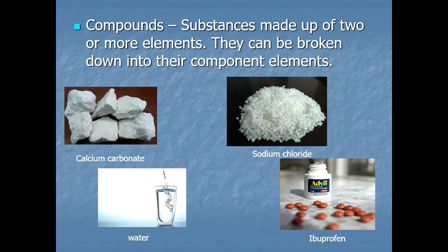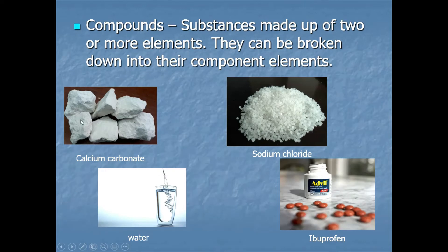Compounds are substances made up of two or more elements, and because they contain more than one element, they can be broken down into their component elements. For example, calcium carbonate is made up of three elements: calcium, carbon, and oxygen — one calcium for every one carbon for every three oxygens. That specific proportion is what makes it calcium carbonate.